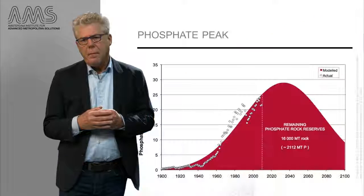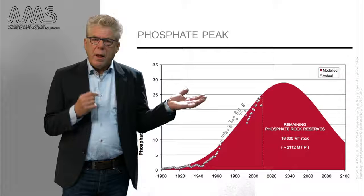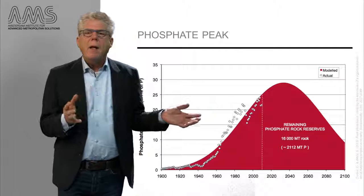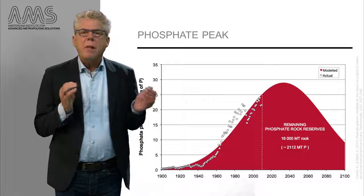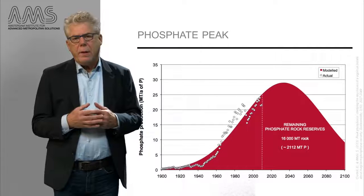It is estimated that about 1% of the global energy used is actually used for fixing nitrogen from the atmosphere. Phosphorus, on the other end, is a non-renewable resource and its availability is estimated to decline drastically in the coming decades.